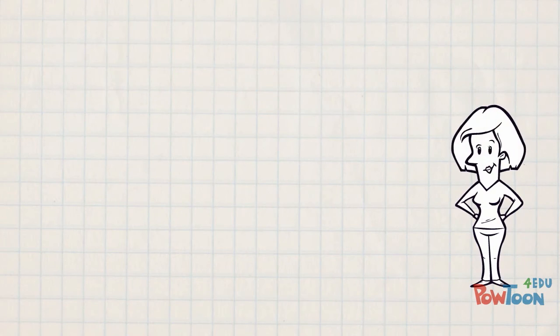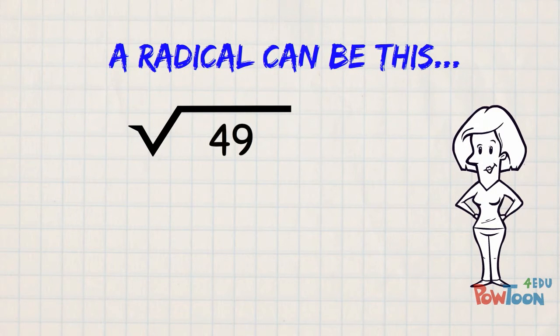Now you understand that a radical can be this, which we read as the square root of 49. Evaluating it, if you know your tables, you know 7 times 7 or 7 squared is 49. The square root of 49 is 7.